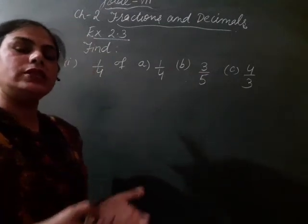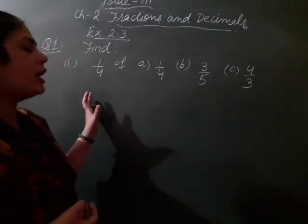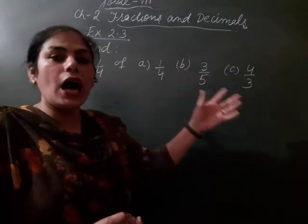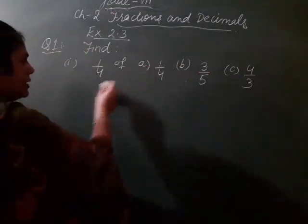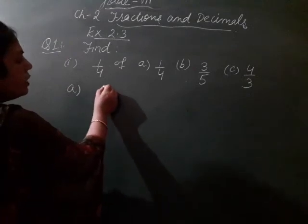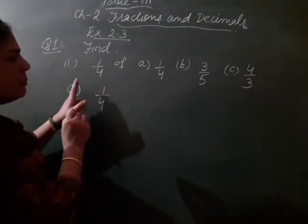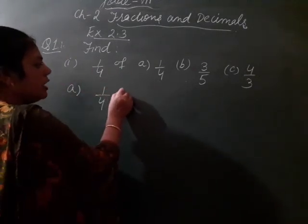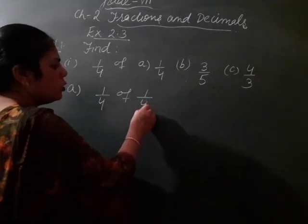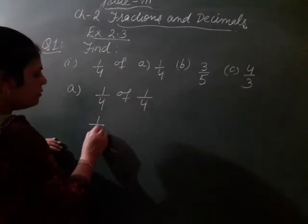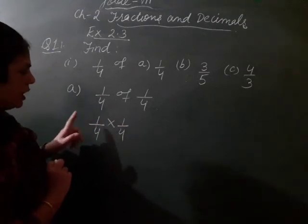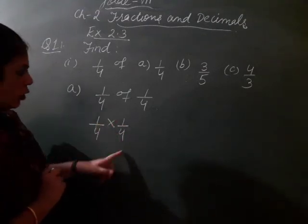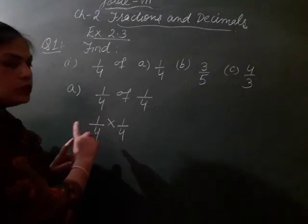As we have done in our last videos, how we find 1 by 4, half of anything - of means you have to multiply. So let's start with first part: 1 by 4 of 1 by 4. Of means you have to multiply by 1 by 4. Now, up or down anywhere, numerator-denominator cutting nahi hoti. So how we solve it?